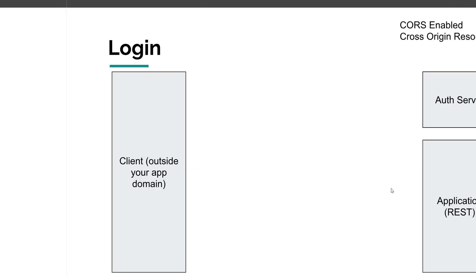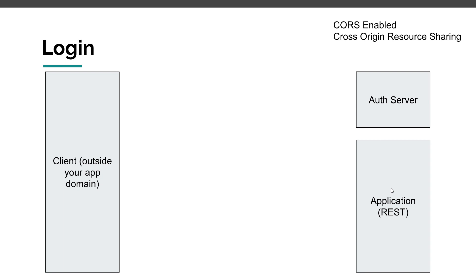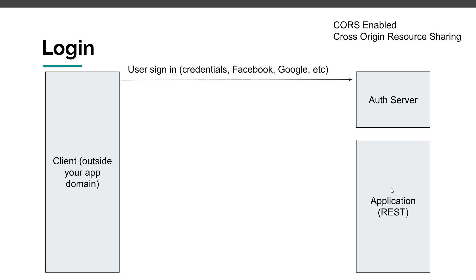Before we look at the sample app and write code, let me remind you of the JWT flow in a typical application. On the left you have a client — an Angular app, mobile app, or desktop app. On the right you have your application with an authentication server and REST endpoints exposing business logic. You also need to enable CORS — cross-origin resource sharing — on your API endpoints, otherwise this scenario will not work. The user signs in by submitting credentials to the authentication server.